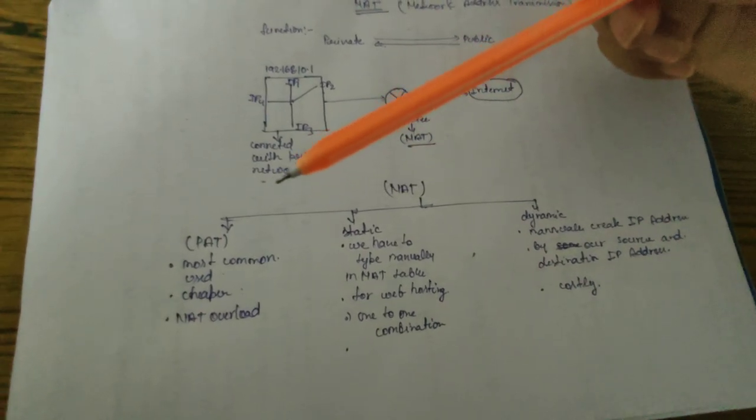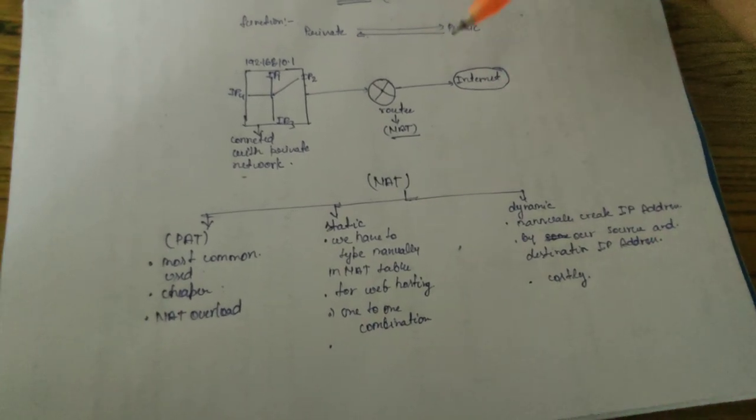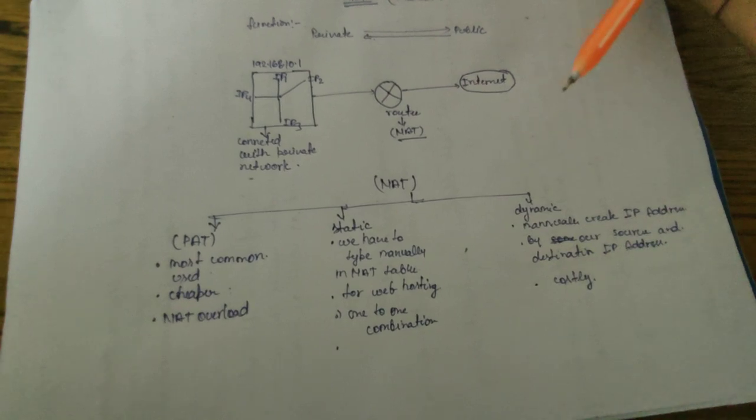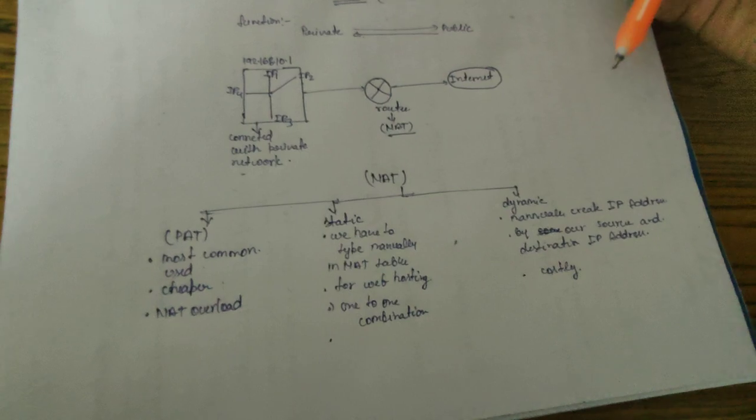So NAT uses PAT communication, and here is Static and here is Dynamic. In Static, we have to manually type our IP addresses into the NAT table, and it is used for web hosting. It is also known as one-to-one communication.